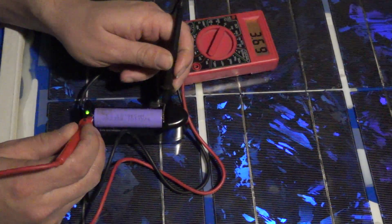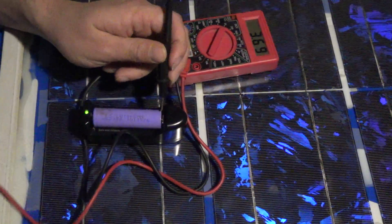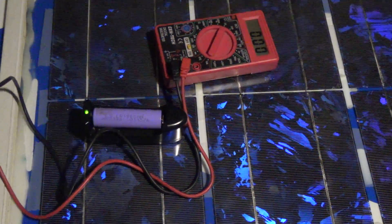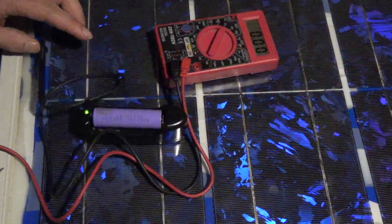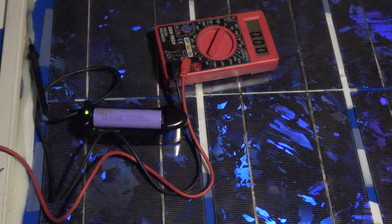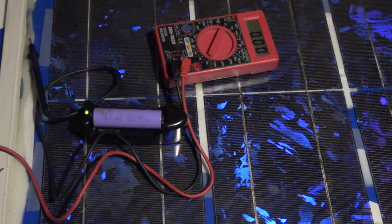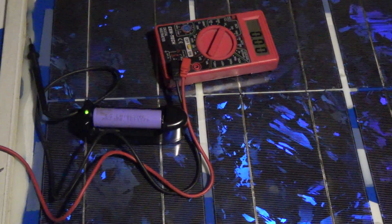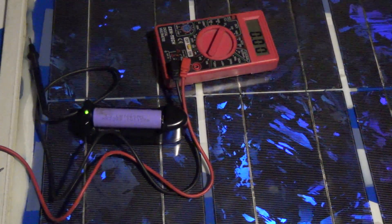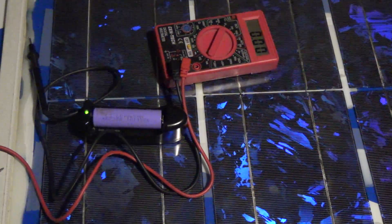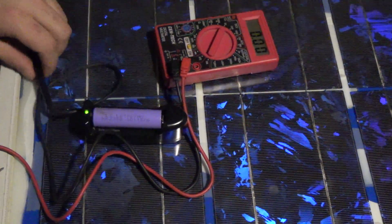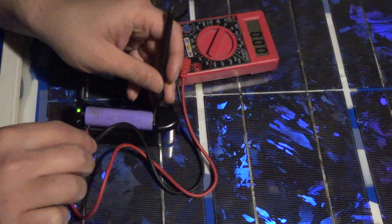Right now we are at 3.69 volts. This battery's probably got about 30 minutes of charging on it already. When I first put this battery on there it was 0.92 volts, and now we're up to 3.69.